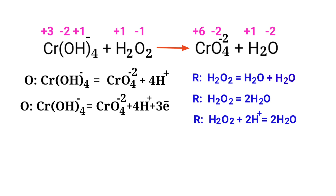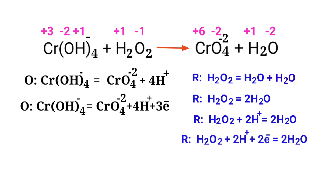Now equal the addition of charges in the reduction half reaction. Both sides are not equal; to make them equal, add 2 electrons to the left side to make it equal to 0. Now the addition of charges are equaled in the reduction half reaction.